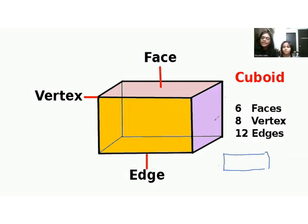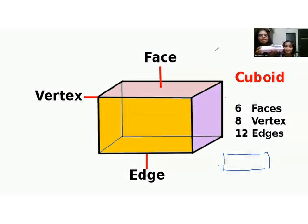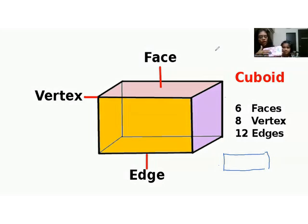A cuboid is similar to a cube — a cube also has six faces, and same way a cuboid also has one, two, three, four, five and six faces. And eight vertices — one, two, three, four, five, six, seven, eight. Eight vertices and six faces.